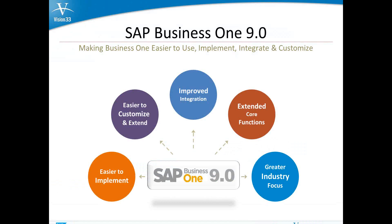So why would you want to go to version 9? Well, pretty much because it's easier to implement. The extendability and customizations are a lot easier than they were before. The integration is much tighter between the companies, which is really good if you have a whole bunch of different subsidiaries that all have to talk to each other. The core functions are a lot more solid, and we've also put some focus on the different industries where we have verticals.